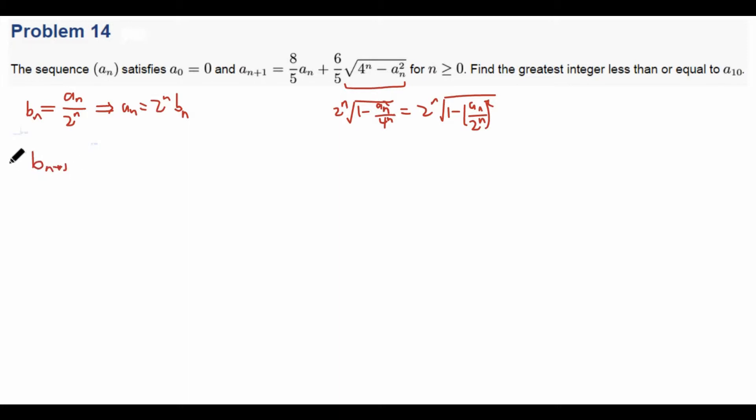So we get that 2^{n+1} times B_n equals 8/5 times 2^n times A_n plus 6/5 times the square root of 4^n minus 2^n times B_n squared. Oops, this is 2^n times B_n squared. Okay, now we can simplify this part. Remember how we factor out a 4^n from the inside of the square root? Now this turns into 6/5 times 2^n square root of 1 minus B_n squared.